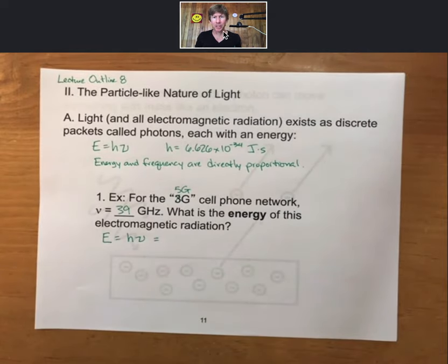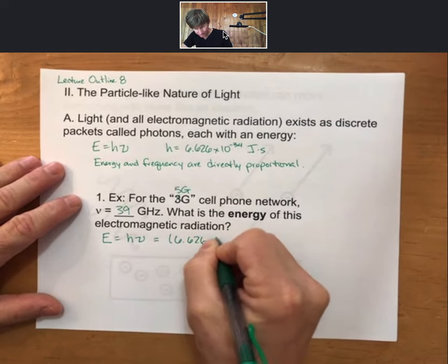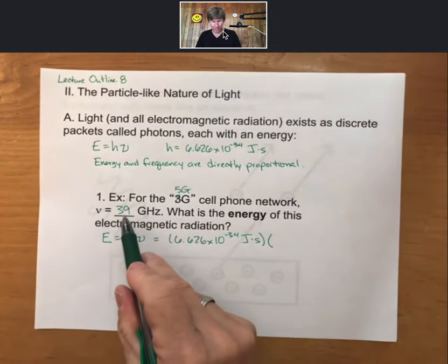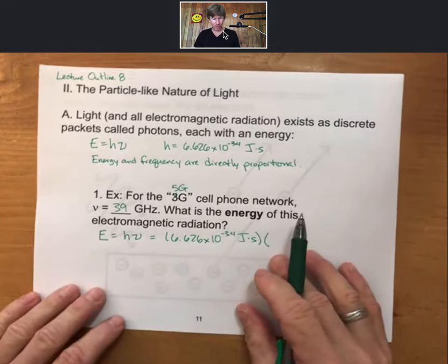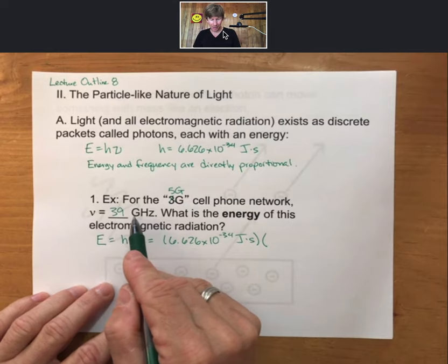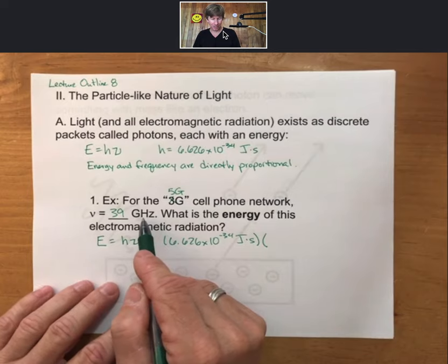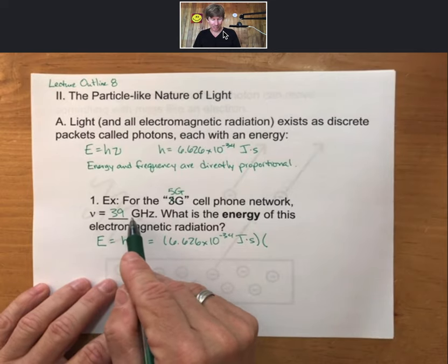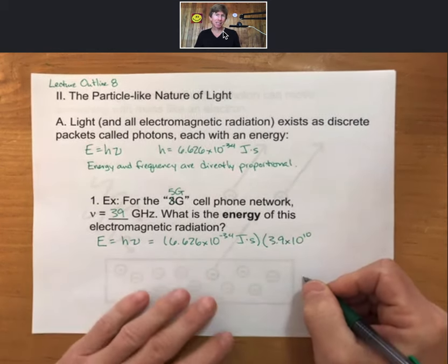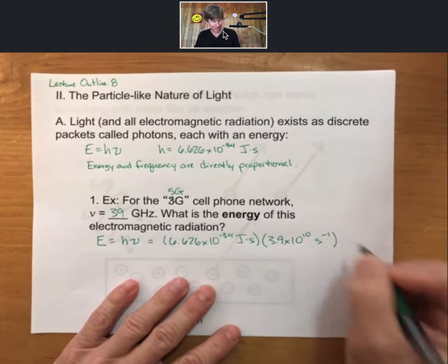We have our equation for energy. We have Planck's constant. And we have 39 gigahertz, which we saw, gigahertz was 1 times 10 to the 9 hertz. And hertz was 1 over second, or second to the minus 1. So this 39 gigahertz became 3.9 times 10 to the 10 hertz, or 3.9 times 10 to the 10 seconds to the minus 1.